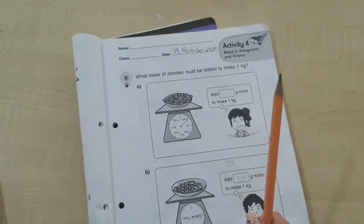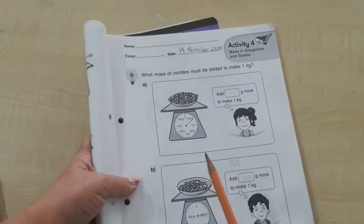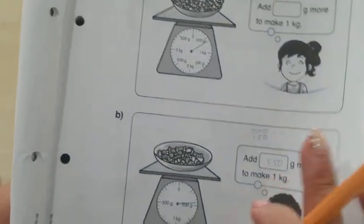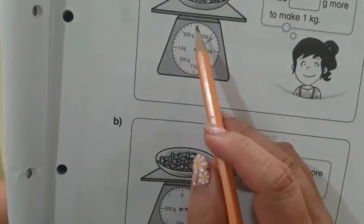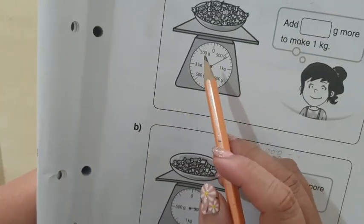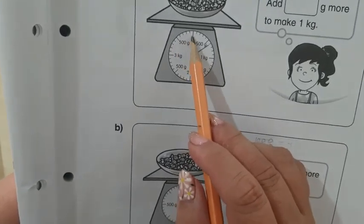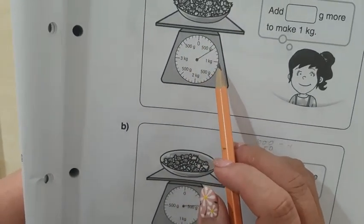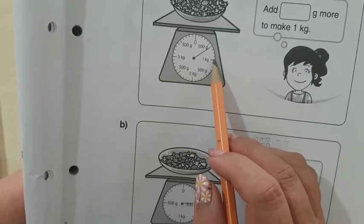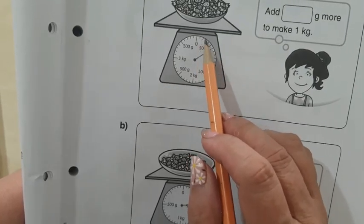Now look at the scale and read the scale. The scale goes from 0 to 1 kg. The first thing you need to read is how many parts are there from 0 to 1 kg. There are 10 parts.